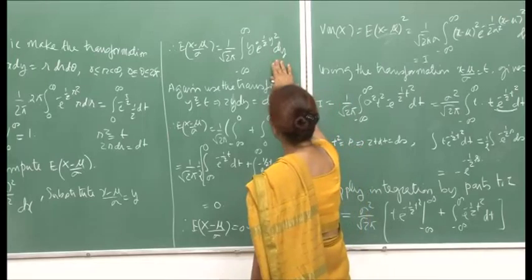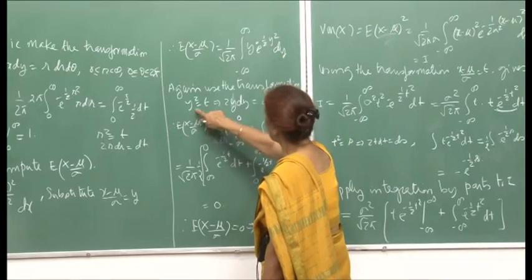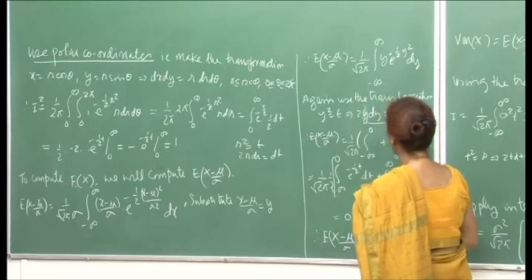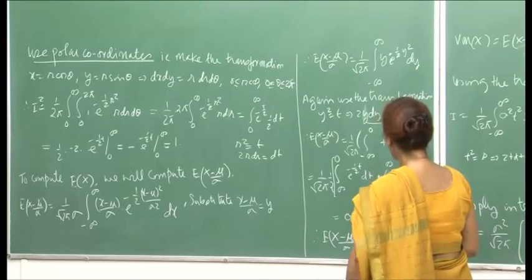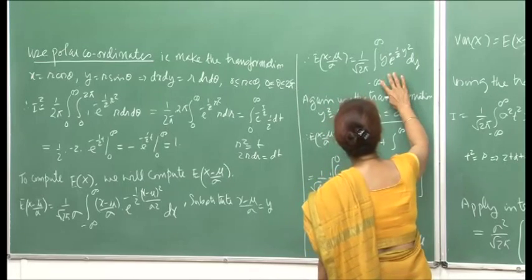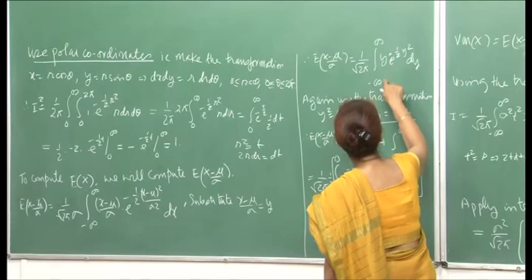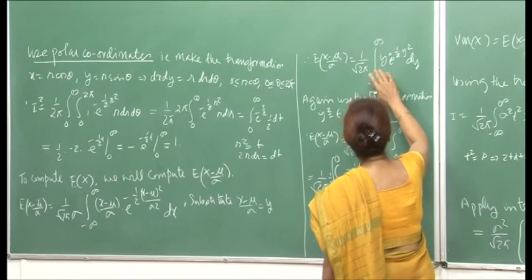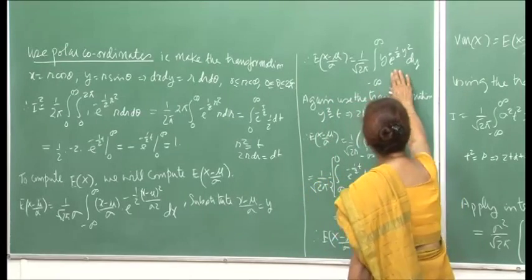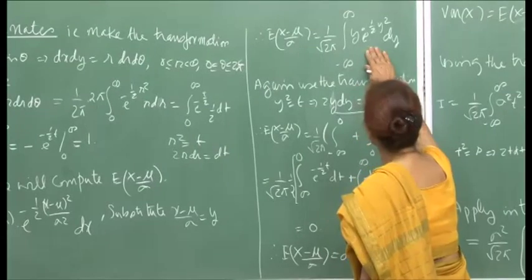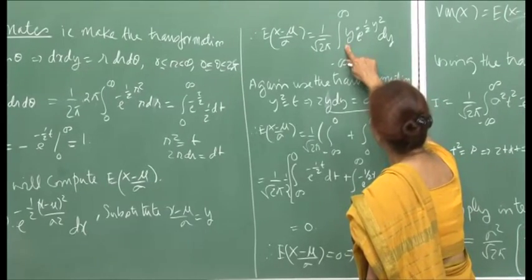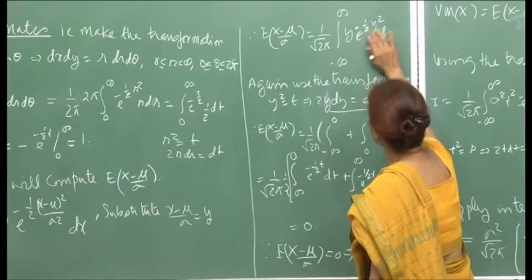Now you have this, so again you make the transformation y squared = t, the same steps, and you get this. Now, what I am saying is that before I make this substitution, I will break up this integral to minus infinity. One way, I can immediately conclude that this integral is 0, because this is an odd integral — y is here, and the change of sign will matter — since this is from minus infinity to infinity, this integral will be 0.